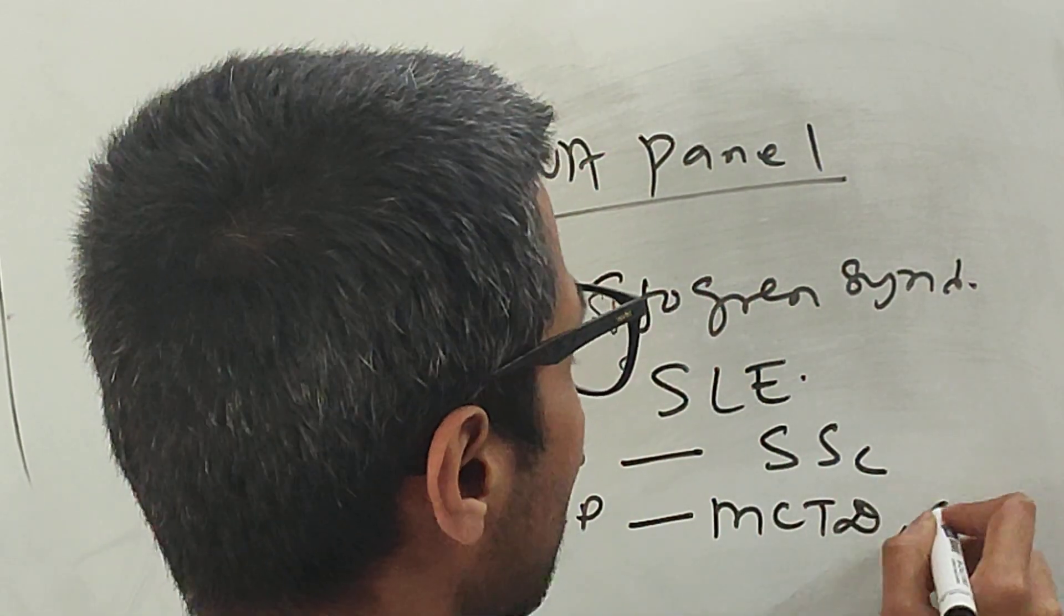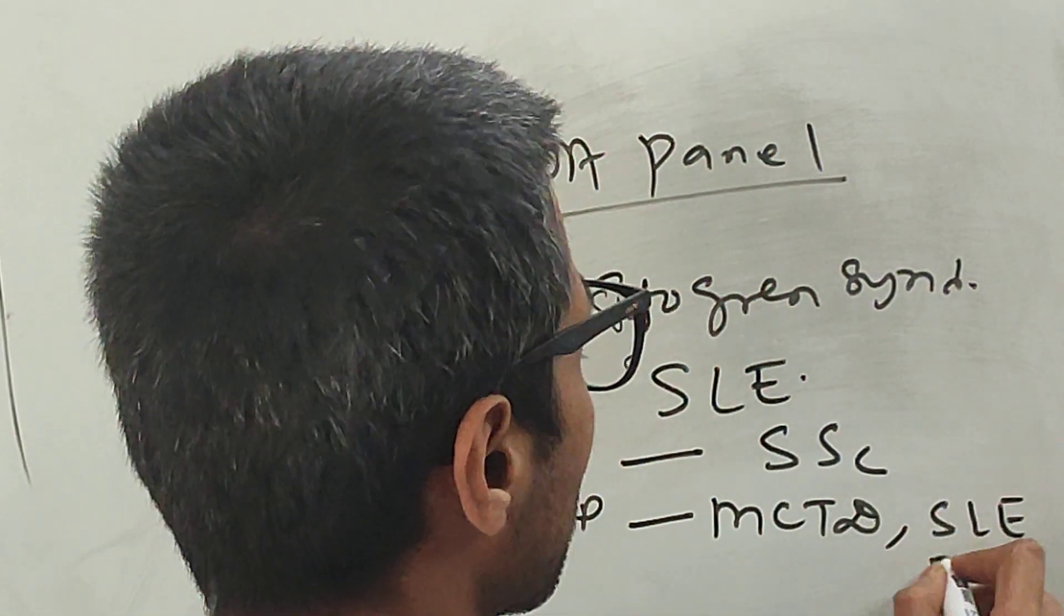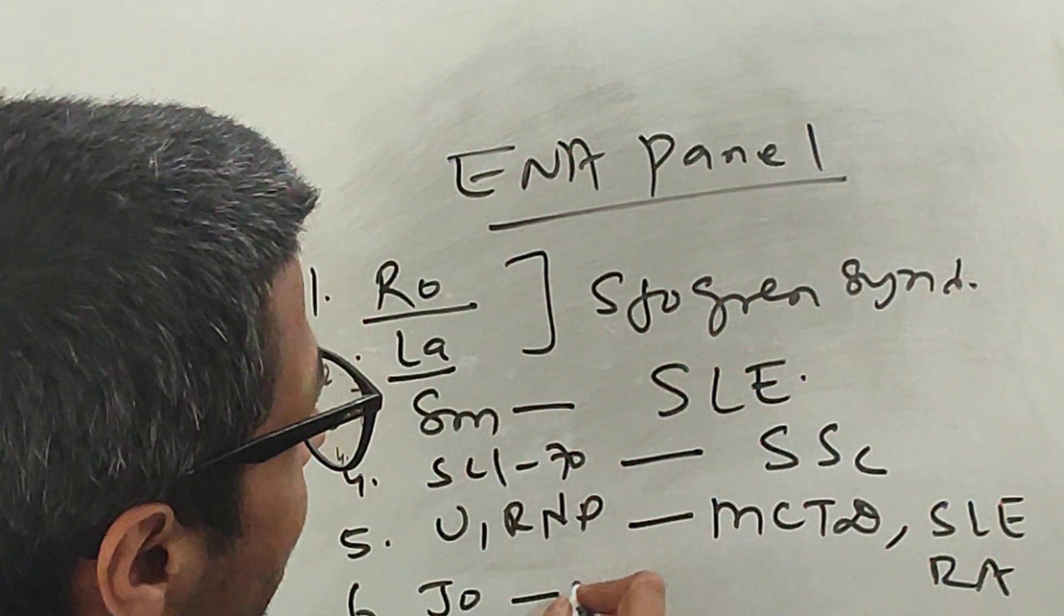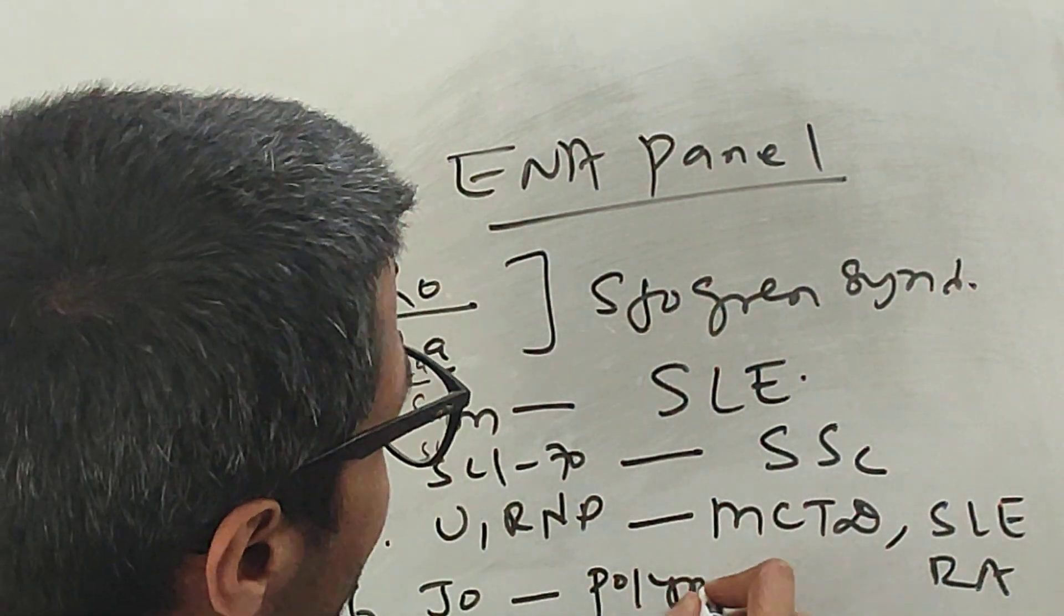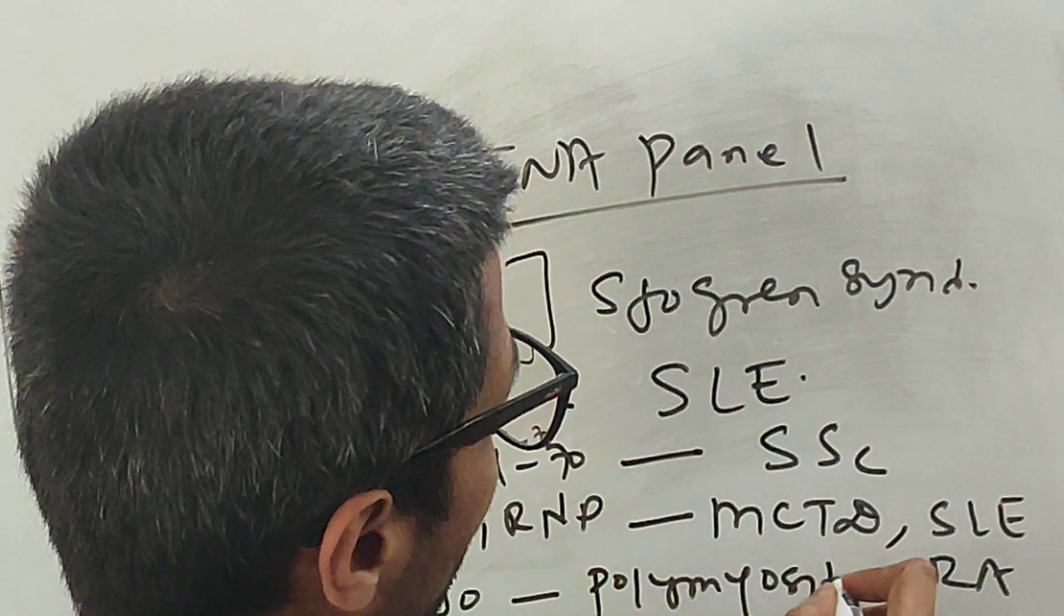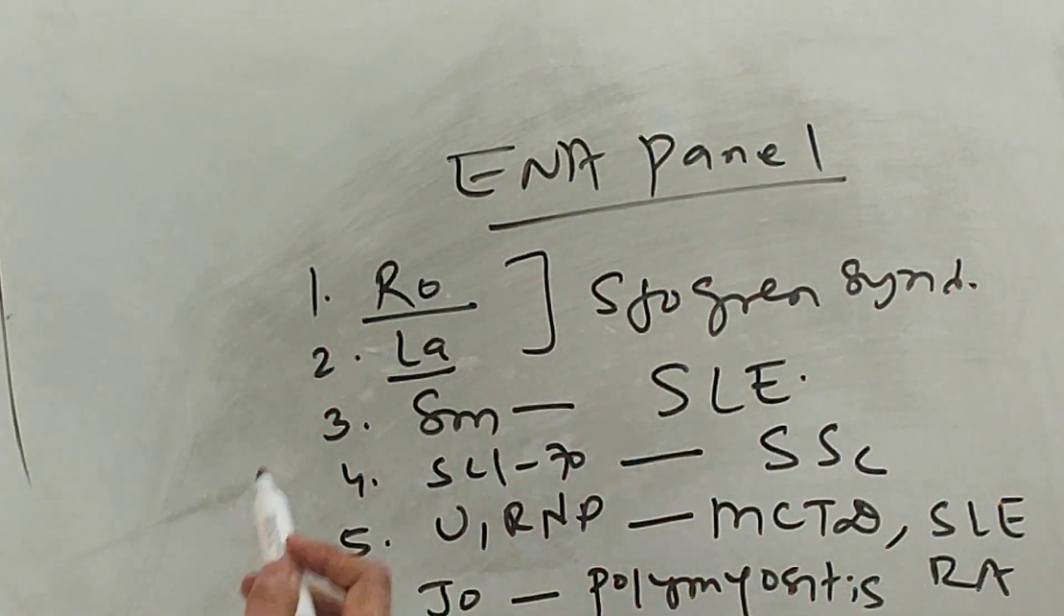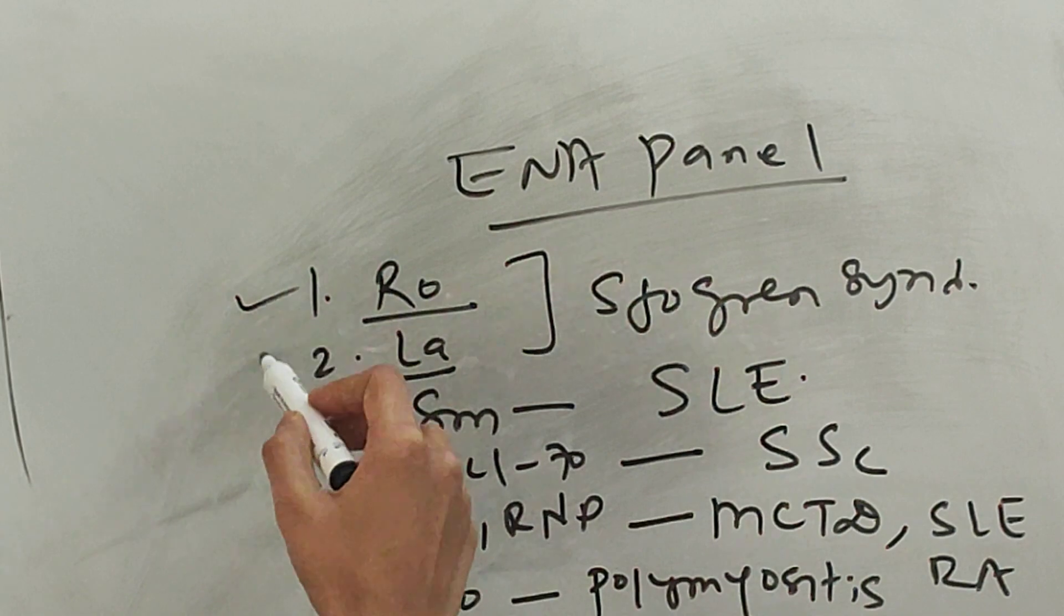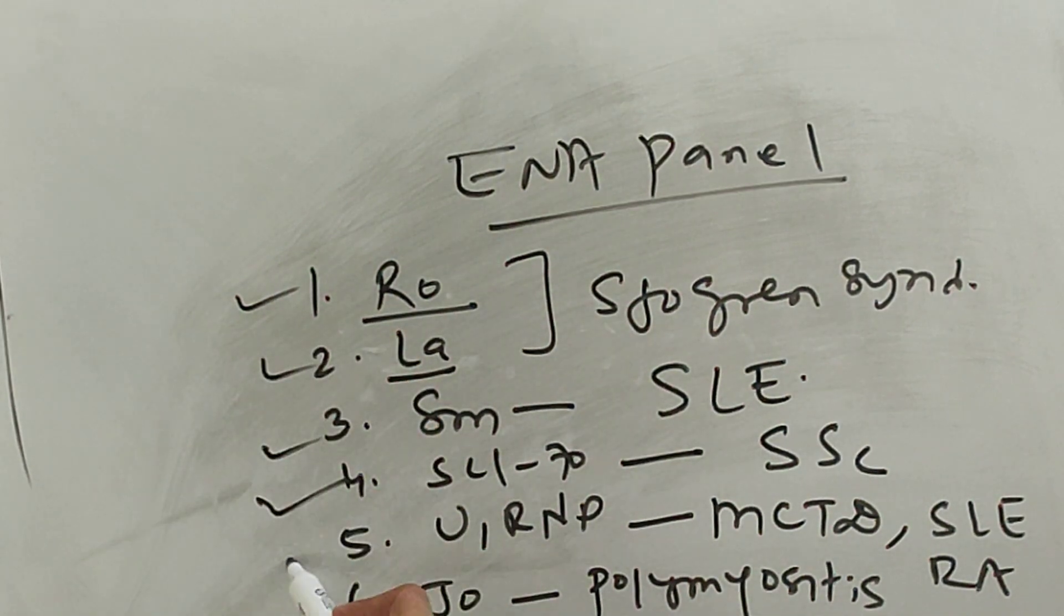Jo points towards polymyositis. So basically you have to remember six antigens: Ro, La, Smith, Scl-70, U1RNP, and Jo.